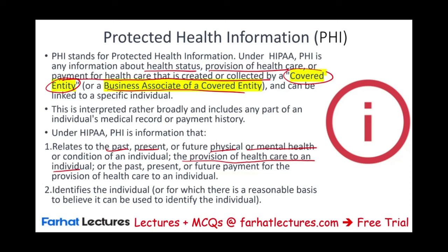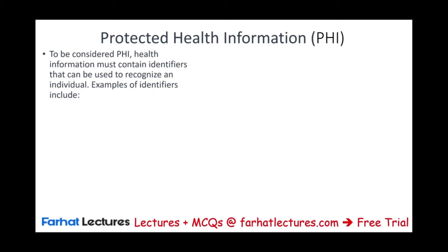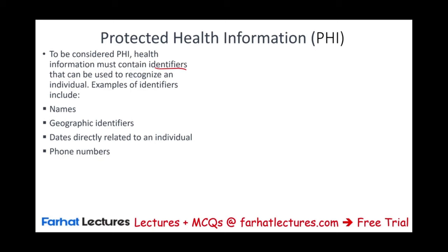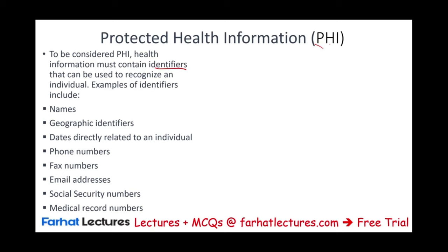PHI also includes information where there is a reasonable basis to believe it can be used to identify an individual. Identifiers include: name, geographical identification and addresses, date of birth, phone numbers, fax numbers, email addresses, social security numbers, and medical record numbers — all of those are identifiers for protected health information.